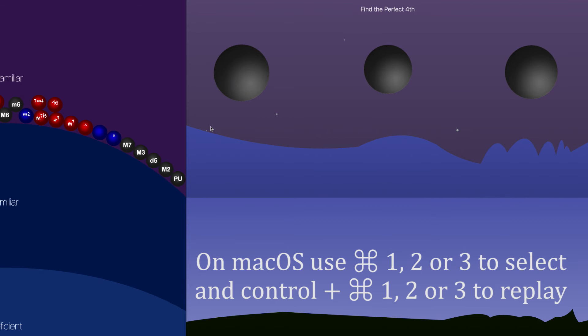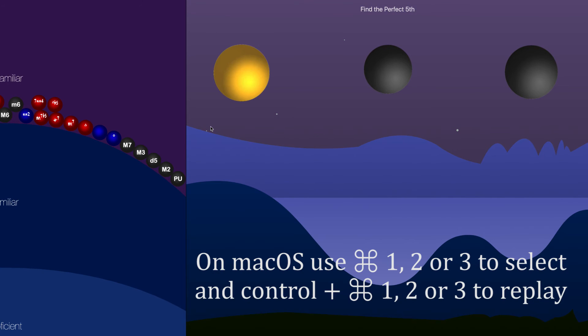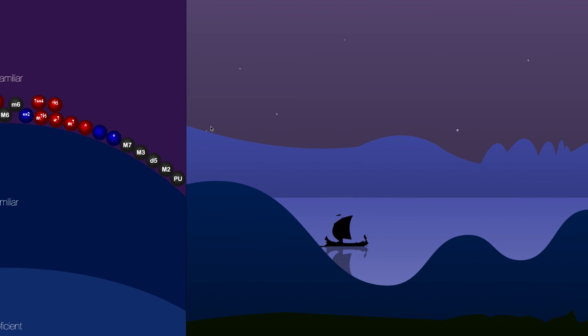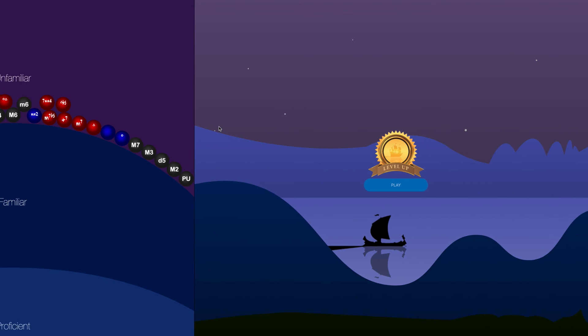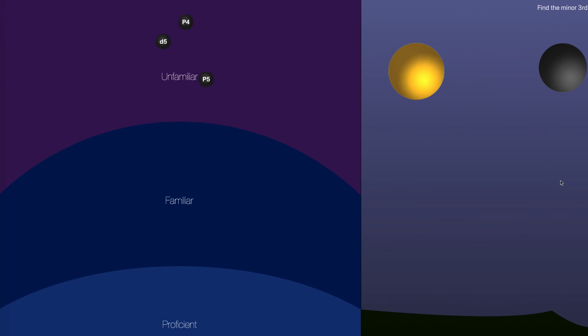Perfect fourth. There we go. And there we go, there's our animation and we've leveled up. Now let's click on play and see what happens to our landscape over here and which one of the intervals that we just worked on are now moved into the familiar territory. I see the perfect fourth, the perfect fifth, and the diminished fifth are now down in this familiar area. So now Politonus 2 is going to focus on other intervals that I'm not familiar with and it's going to more or less leave those guys alone.